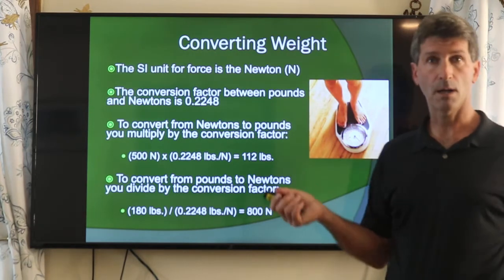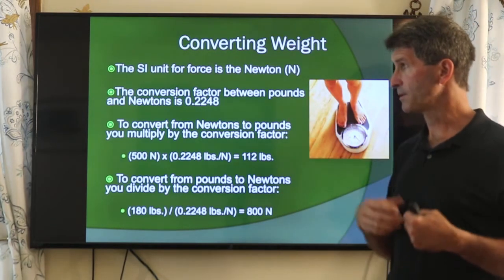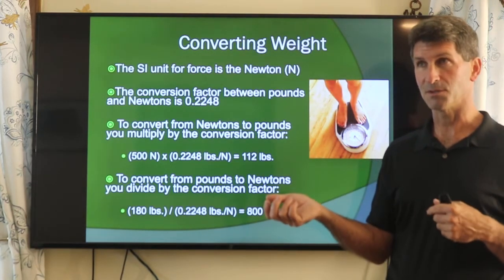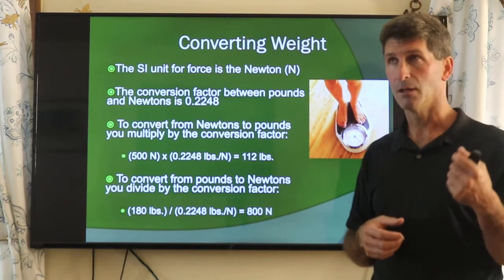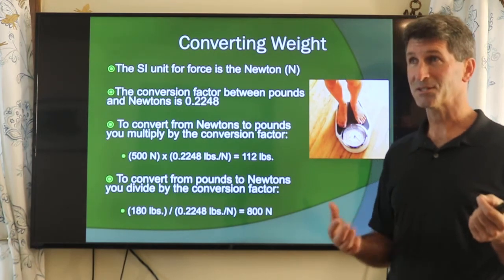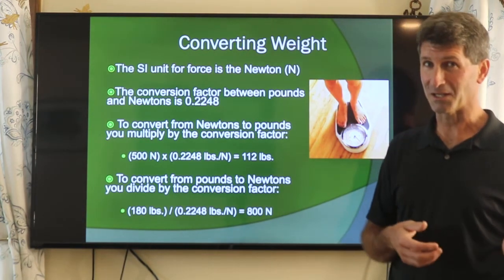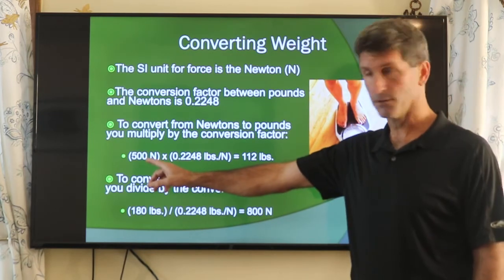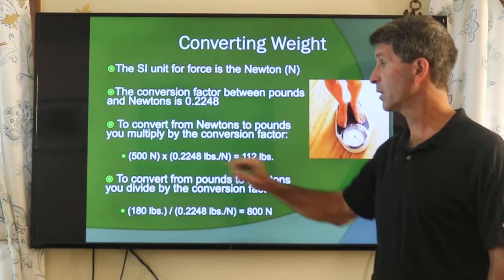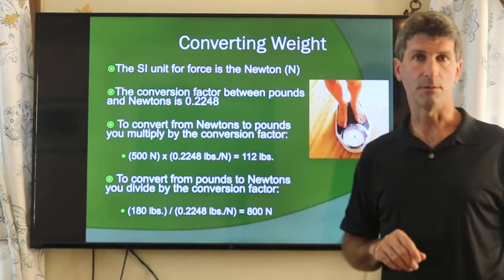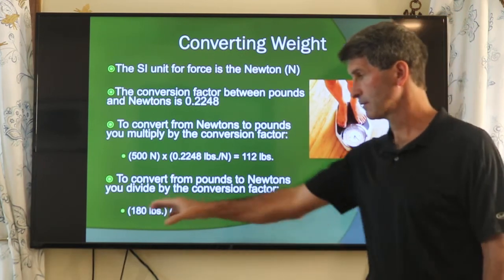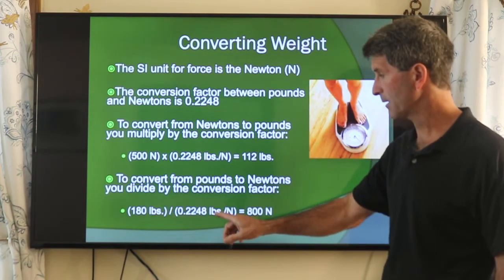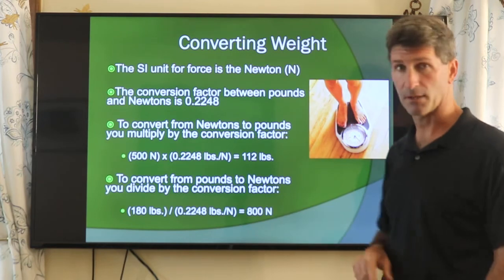Later on when we do forces, we're going to be converting between pounds and newtons. Some people mistakenly think that kilograms and newtons are the same type of unit — kilograms are mass. The US customary unit for mass, by the way, is the slug, but nobody uses that. To convert from pounds to newtons or vice versa, use a conversion factor: 500 newtons times 0.2248 pounds per newton — the newtons cancel out, leaving pounds. Or go the other way: 180 pounds divided by the conversion factor — pounds in the numerator cancels pounds in the denominator, leaving newtons.